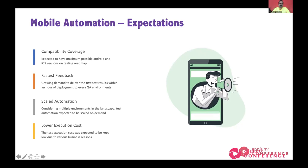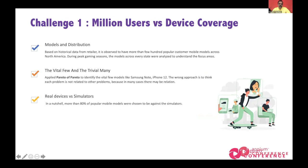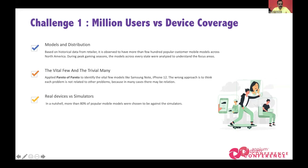With one million users, we had to analyze device coverage. We looked at models across North America, especially California where most users came from. We applied Pareto of Pareto — 20% of 20% — giving us 4% of the devices. We ran that 4% on real devices using cloud providers. For virtual devices, cloud providers weren't working well and were too expensive, so we ran most tests on simulators, giving us a huge advantage in cost and coverage.